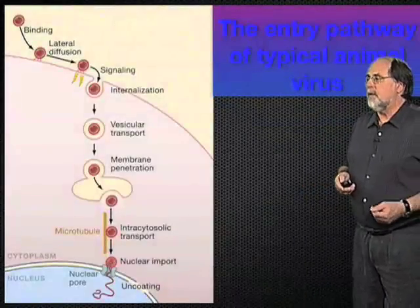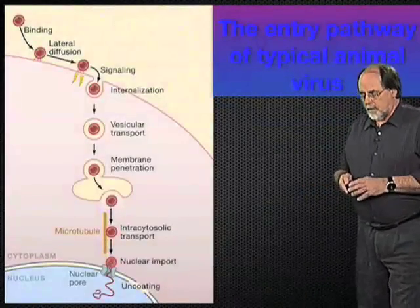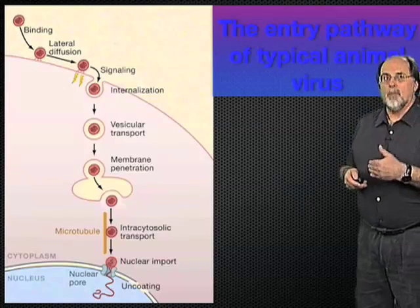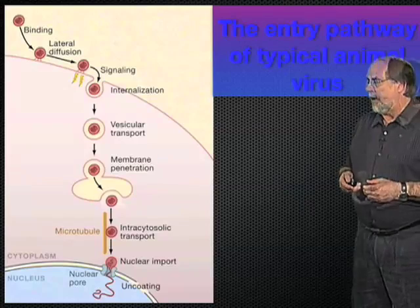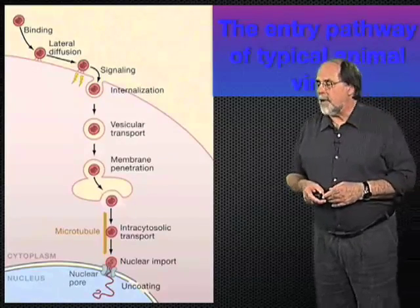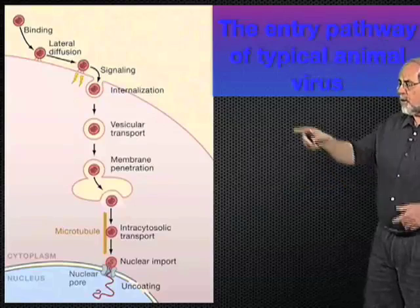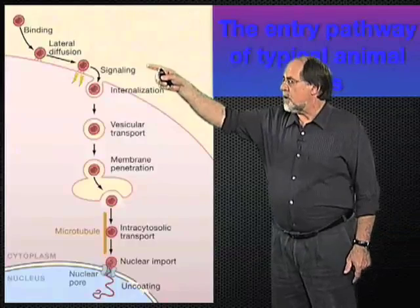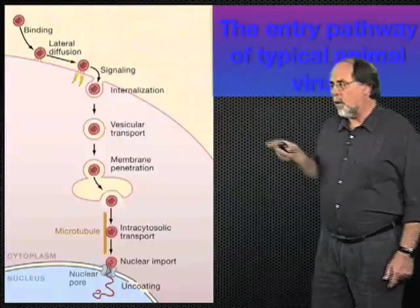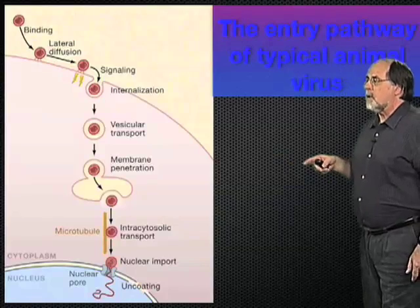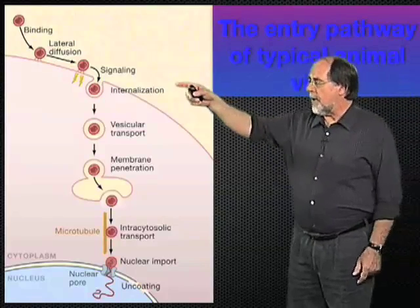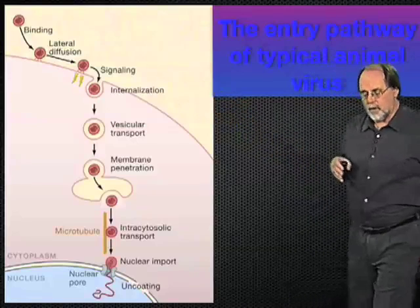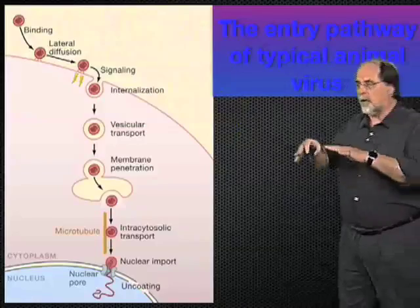Many studies with different viruses have shown what the general program of virus entry looks like. Virus entry and infection always starts with the virus binding to the cell surface. It binds to receptors — cell surface components which serve as binding sites — and after binding, the viral particle typically starts to move around laterally along the membrane surface.